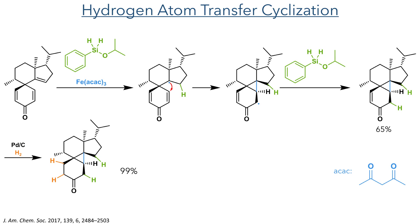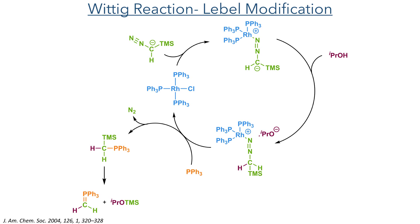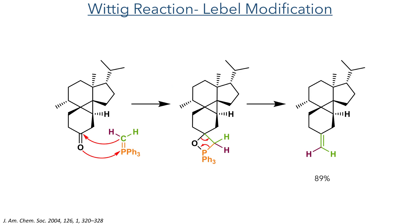The remaining enone was then hydrogenated with palladium on carbon and hydrogen gas in a 99% yield. Taking this compound forward, the researchers then carried out a Wittig reaction with the Lebel modification. In this reaction, TMS-diazomethane first reacts with Wilkinson's catalyst forming a rhodium-stabilised diazonium salt. The carbon is then protonated by isopropyl alcohol and the addition of triphenylphosphine regenerates Wilkinson's catalyst, allowing for the elimination of nitrogen gas and the formation of methylene triphenylphosphorane. It is this phosphorane that undergoes the Wittig reaction, where the carbon attacks the carbonyl centre while the oxygen attacks the phosphorus, forming an oxaphosphetane ring that then decomposes to form the alkene in an 89% yield.